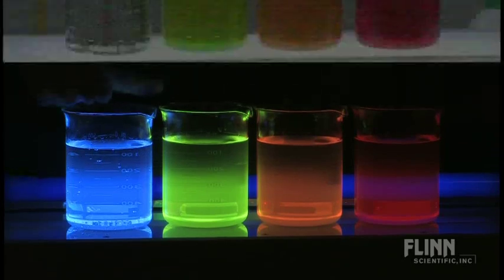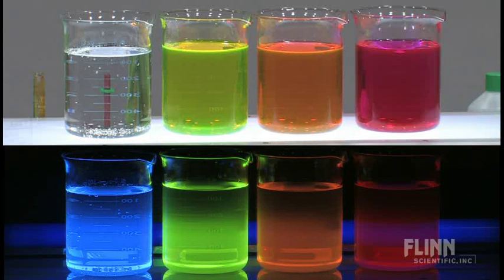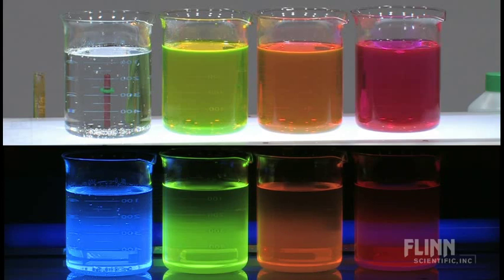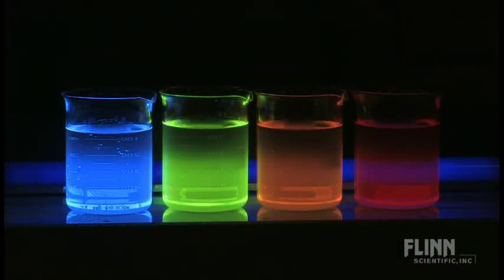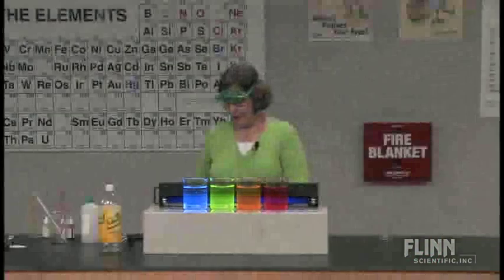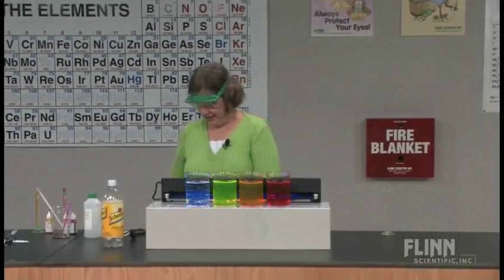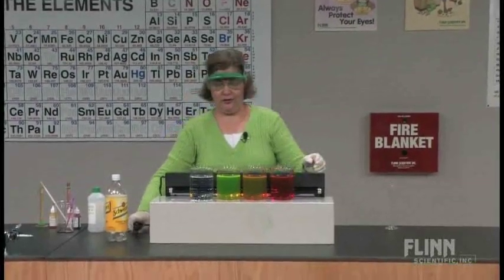The quinine was colorless; it's now fluorescing blue under a black light. The fluorescein was yellow; it's fluorescing bright green. The eosin was orange and is fluorescing more of a yellow color, and the rhodamine was pink and is now fluorescing an orange color. Let's take the lights back up. Let's turn off the black light and go back to our original colors.